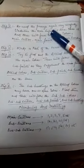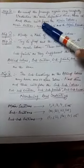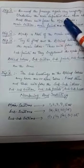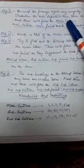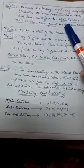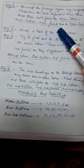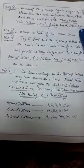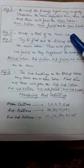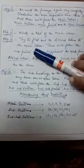Moving to step two, reread the passage again very carefully. Underline the main important lines, the main important points, the clues, and these will form the main ideas, the main sections, the main points and the main headings.